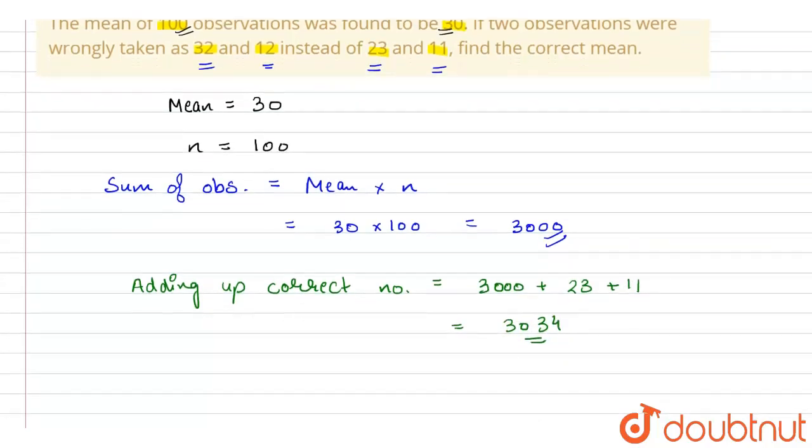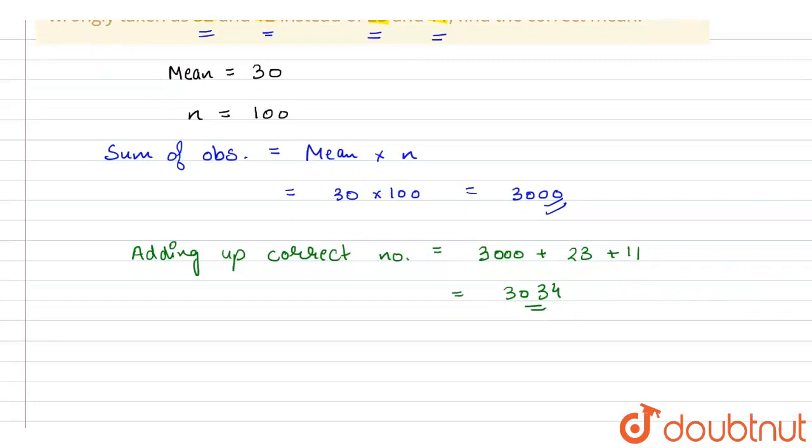So this is the observation including the correct number and the wrong numbers. This is the sum of the observation. So now what we will do is we will subtract the wrong numbers from this.